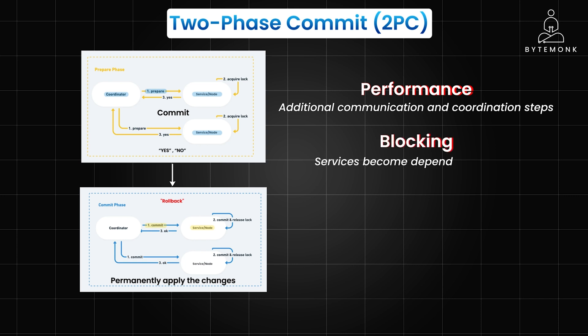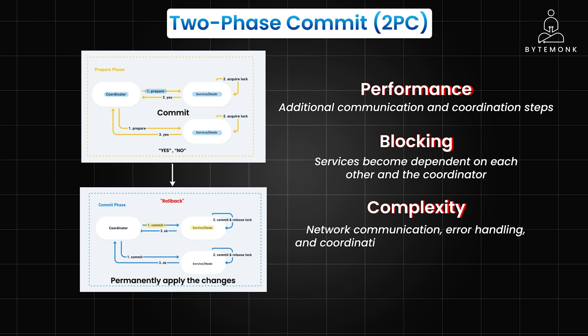Services can become dependent on each other and the coordinator, so participants must wait for the coordinator's decision before proceeding. If participants are waiting on each other to release resources, the transaction can become deadlocked. Also, implementing 2PC correctly is non-trivial — it involves network communication, error handling, and coordination between multiple services.